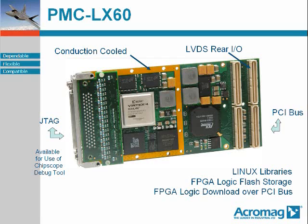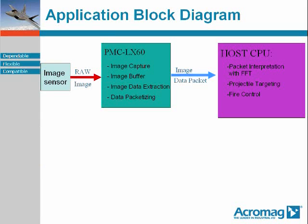The Acromag PMC LX60 was chosen. Notice the conduction cooling ring. The module features a high-speed PCI bus interface, high-speed LVDS off the rear I/O connector, flash for on-module storage of the FPGA logic, and permits the use of ChipScope for development and debug over the JTAG port. The basic flow of information and a breakdown of the tasks performed on the PMC LX60 and on the host CPU are found above.